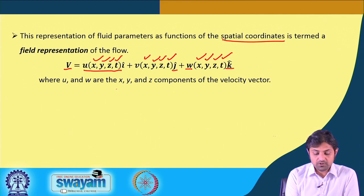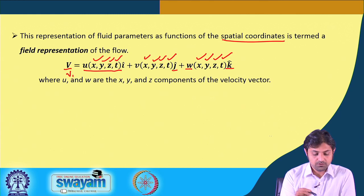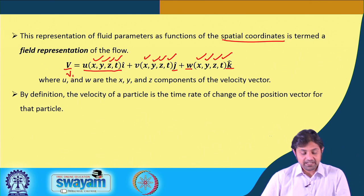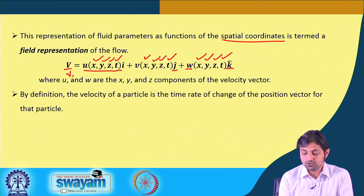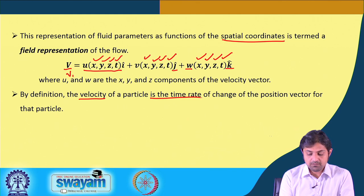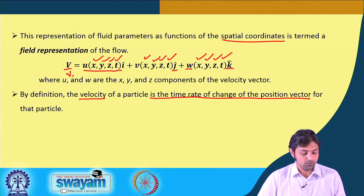u, v, and w are the x, y, and z components of the velocity vector. By definition, the velocity of a particle is the time rate of change of the position vector for that particle.